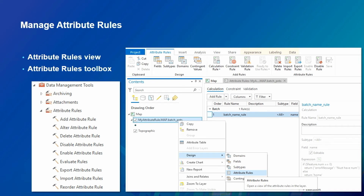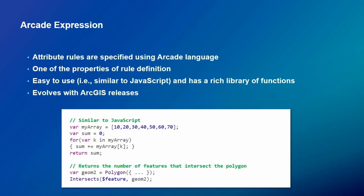Each rule has certain properties: name, description, the subtype the rule applies to, the field, and the expression itself. The attribute rule is based on Arcade expression — a scripting language. The grammar is very similar to JavaScript and has a rich library of functions, including geometry and intersect operations.